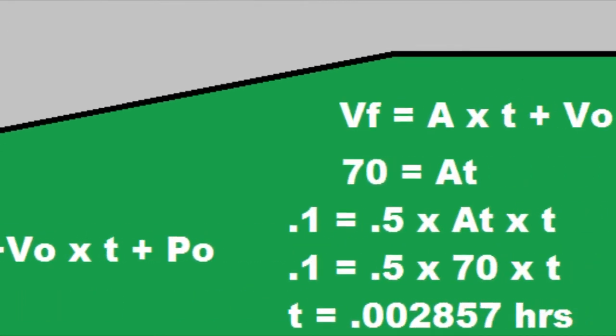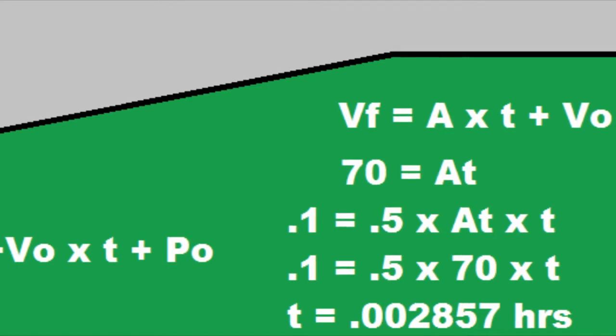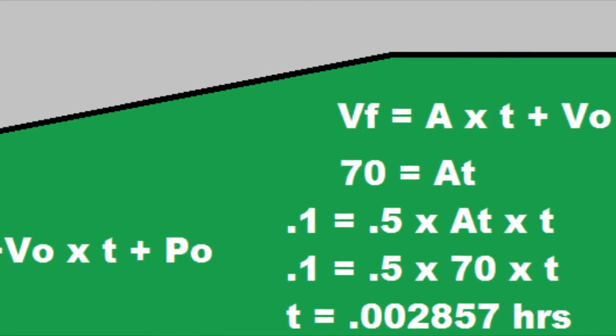There's another equation that's velocity final equals acceleration times time plus velocity initial. So velocity initial is once again 0, so it's just 70 equals acceleration times time.